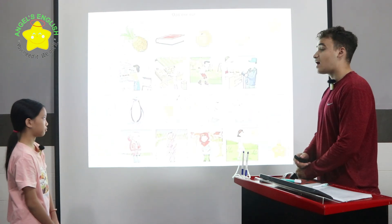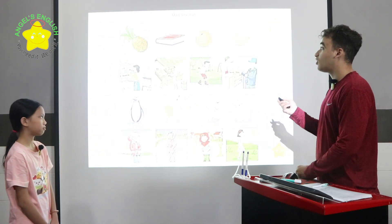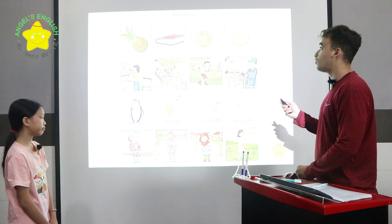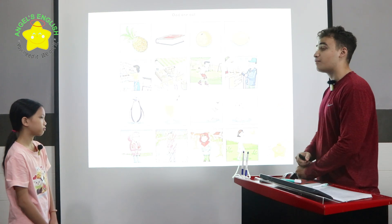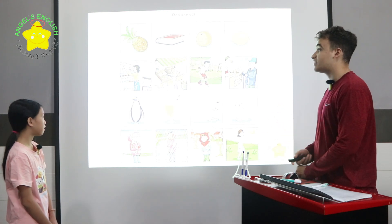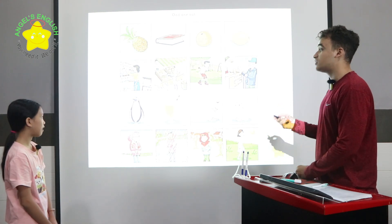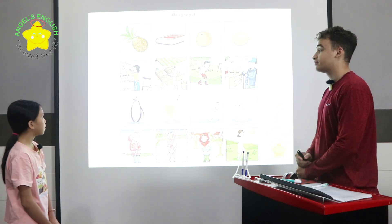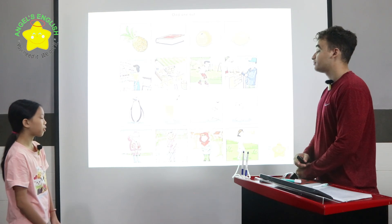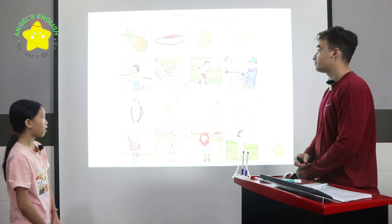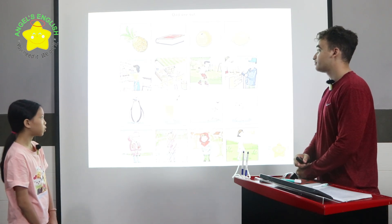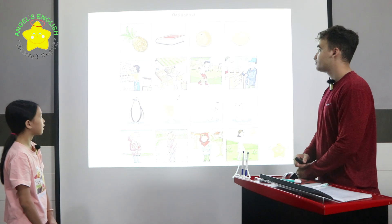Okay. This is called Odd One Out. In row one, the book is different because the pineapple, the orange, and the lemon are all fruits. Can you please tell me the odd ones out in rows two, three, and four? In row two, picture three is different because pictures one, two, and four, they are all the same by something.